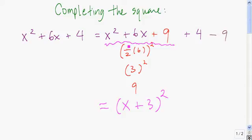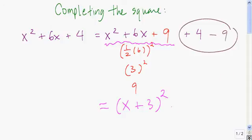To continue rewriting and clean it up, we start by factoring that trinomial to get x plus 3, quantity squared. Then we have plus 4 minus 9 — these two terms combine to give us minus 5. So x squared plus 6x plus 4 is equal to x plus 3, quantity squared, minus 5.